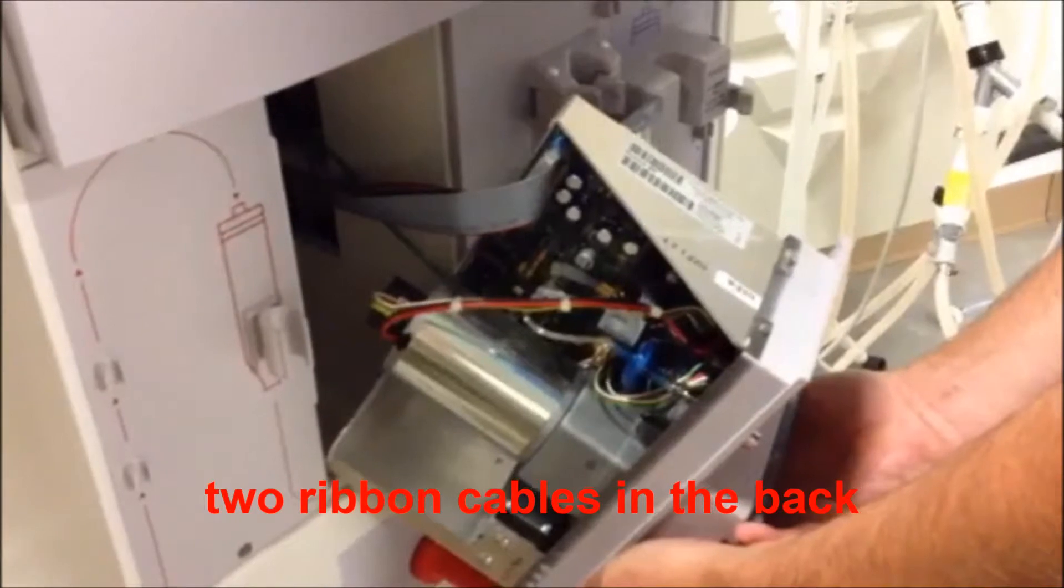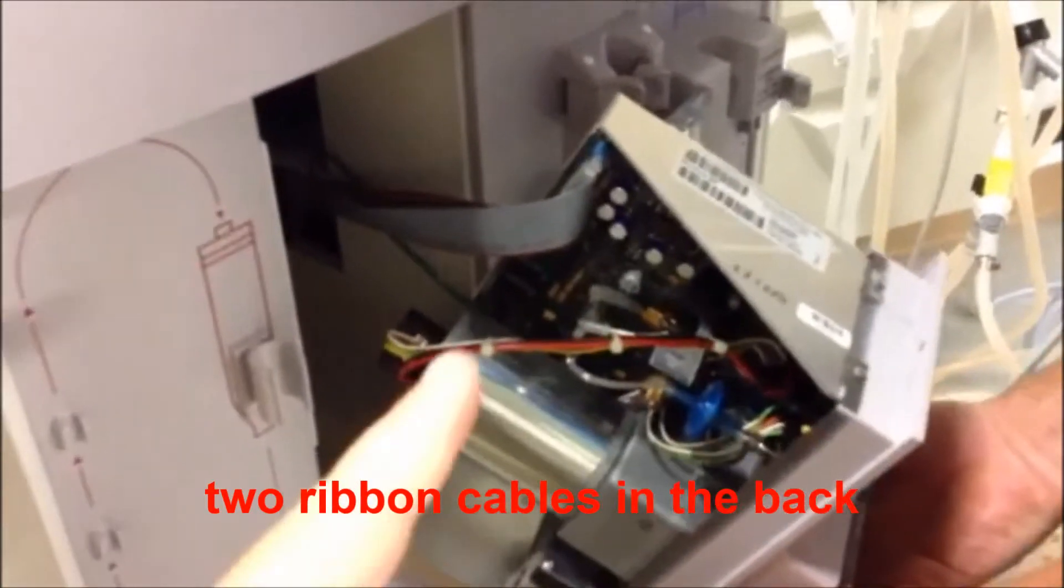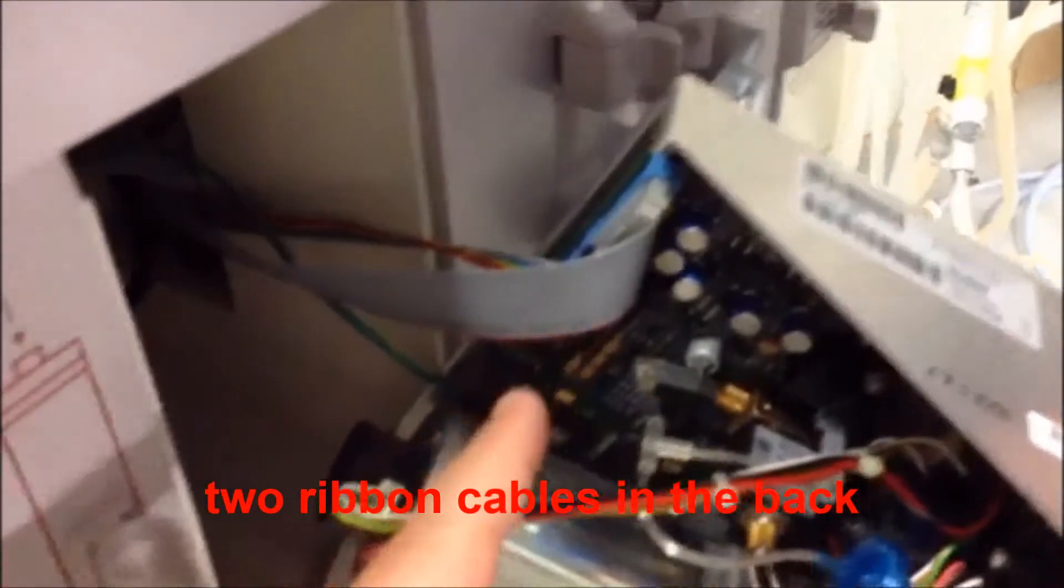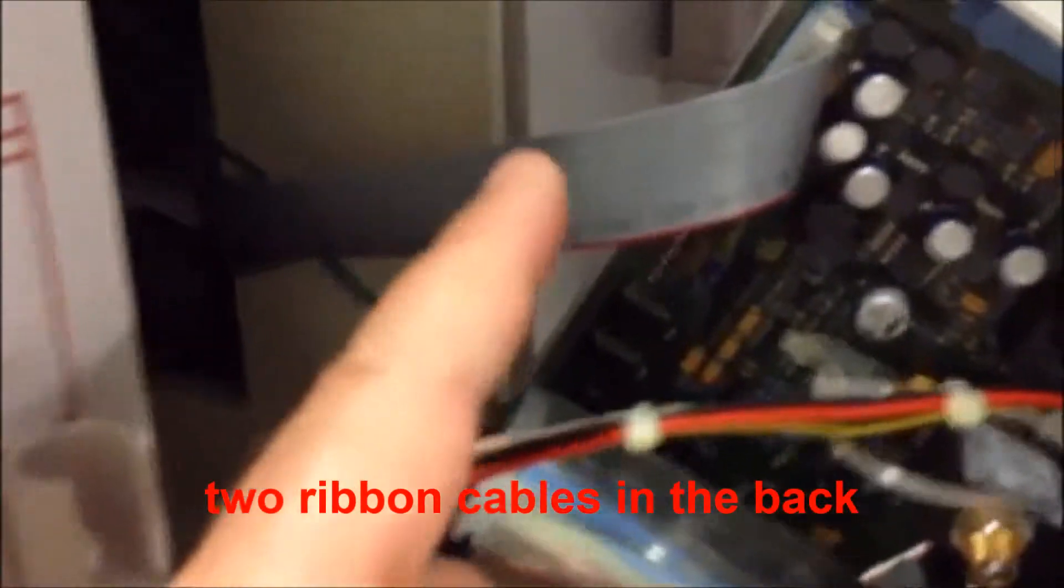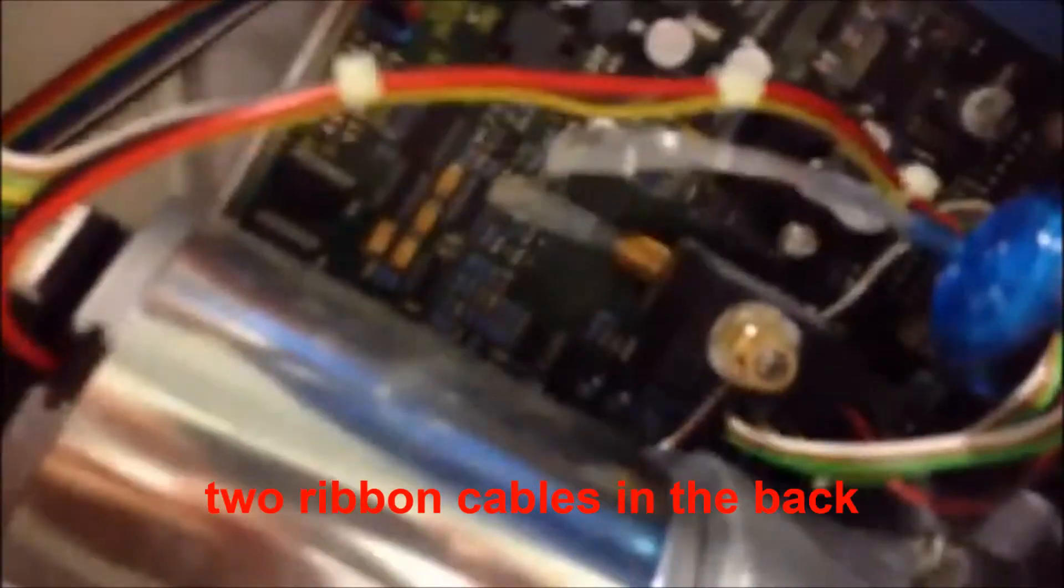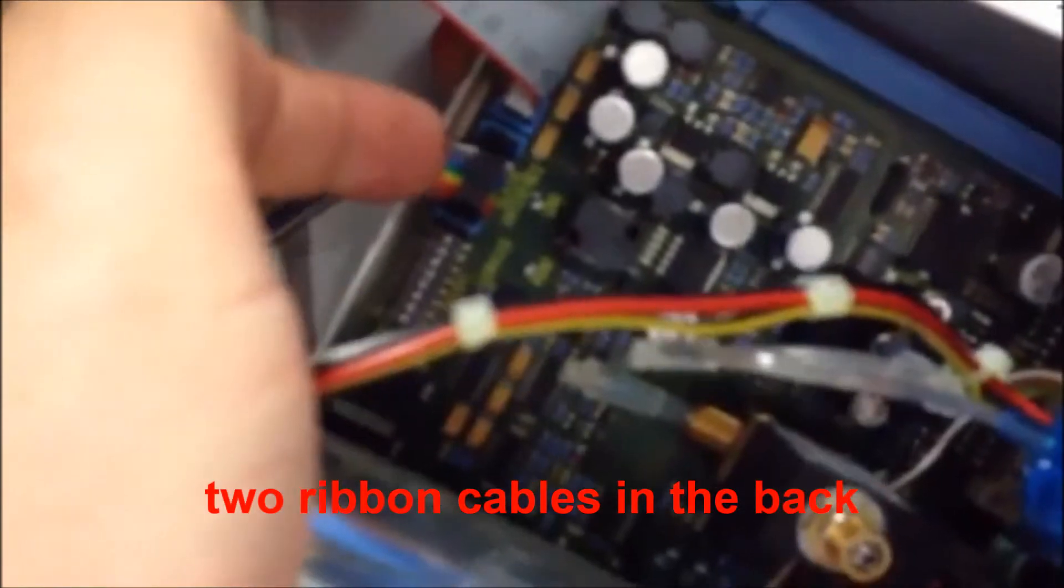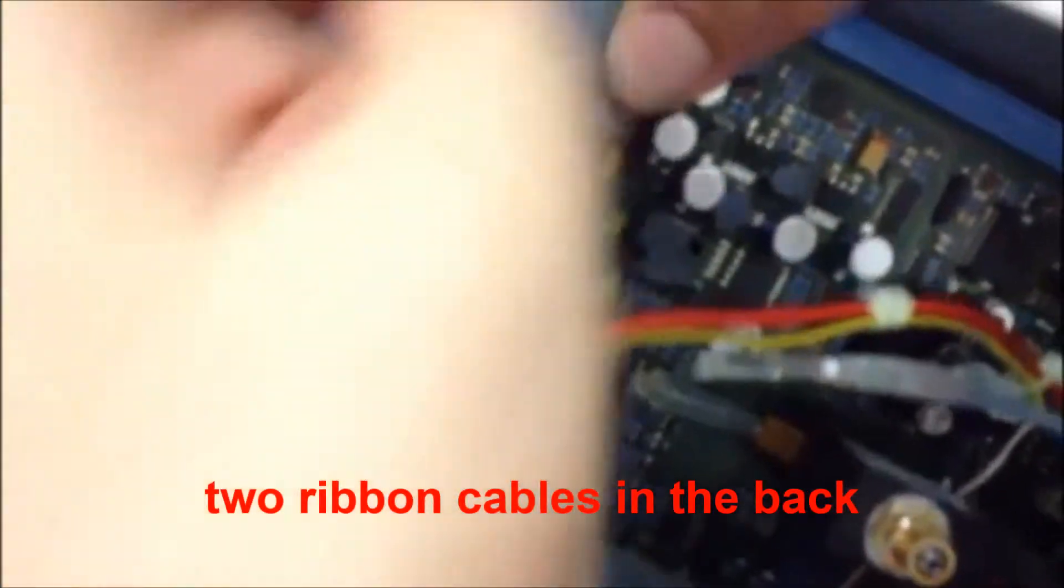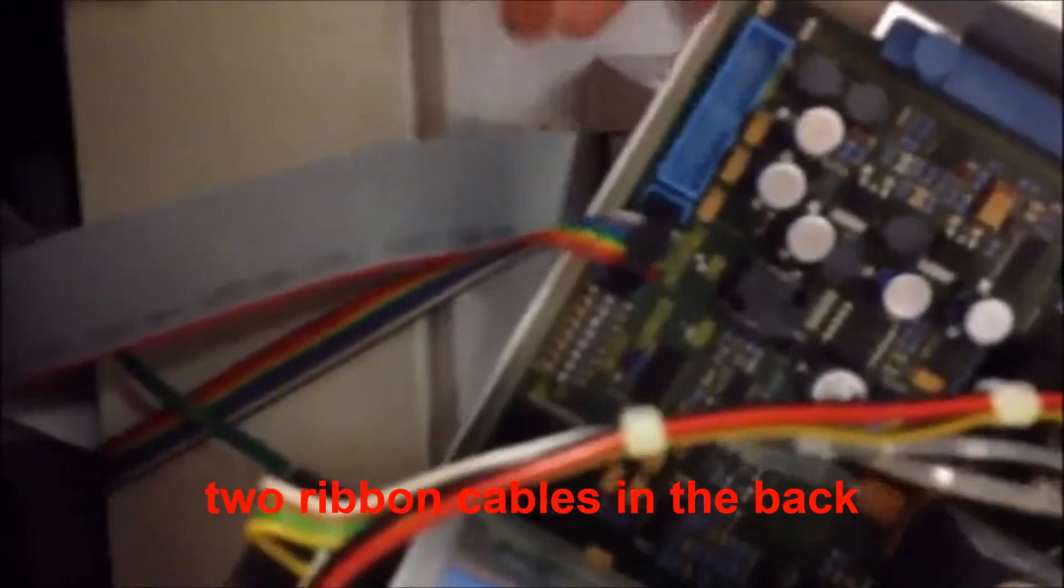There are two ribbon cables in the back that need to be pulled. Here is one, and one is underneath it on the other side. Right here is the second ribbon cable, so these can click and remove. That's one, and this one can be removed as well. Now the whole pump is ready to be removed.